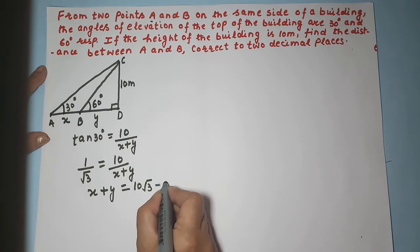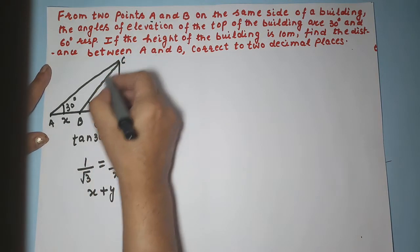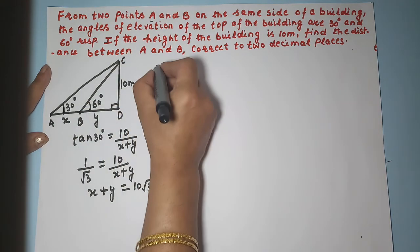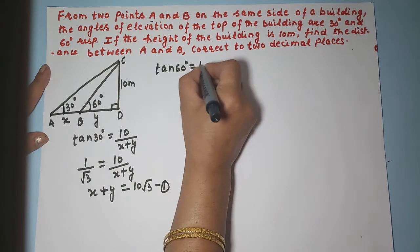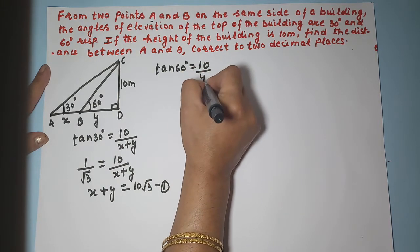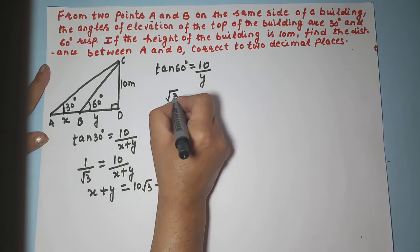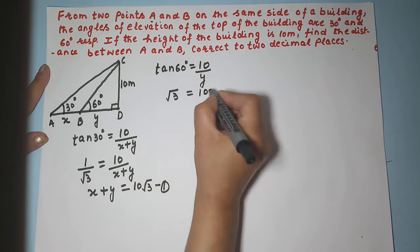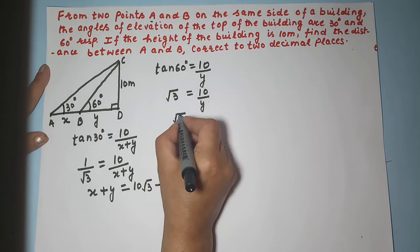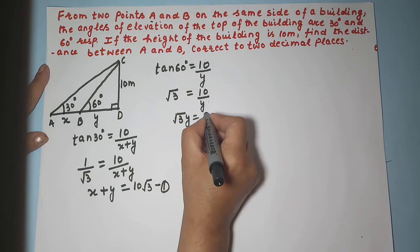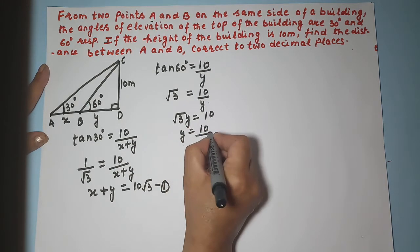Now I will take the inner triangle with tan 60. Tan 60 equals 10 upon Y. The value of tan 60 is root 3, so root 3 equals 10 upon Y. Cross multiplying gives root 3 times Y equals 10, so Y equals 10 upon root 3.